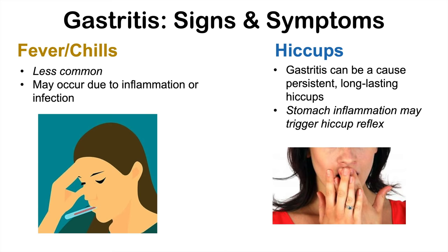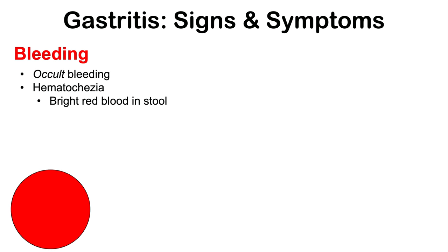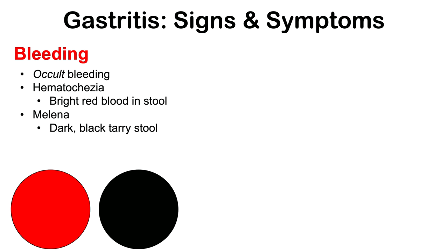Some more serious findings that can occur in gastritis include bleeding. The bleeding can either be occult bleeding — where the patient wouldn't even realize they're having a bleed — or it can be hematochezia, which is a bright red and bloody stool, or melena, which would be dark, black, tarry, and smelly stool. Hematochezia is bright red and often occurs from a lower gastrointestinal bleed, but if it's from an inflamed stomach, it's often due to a very brisk, quick bleed. Melena means the blood has been digested — it's a slower bleed where blood is digested in the gastrointestinal system and comes out as a black, tarry stool.